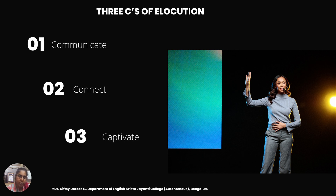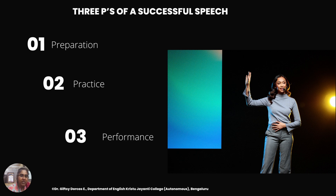Always try to be creative when you are involved in public speaking. So the essential three C's of public speaking are: first, communicate; second, connect; and third, captivate. Moving on, let's find out how you can make a successful speech. To make a successful speech, you need three P's: preparation, practice, and performance.